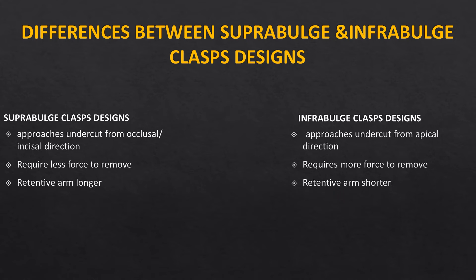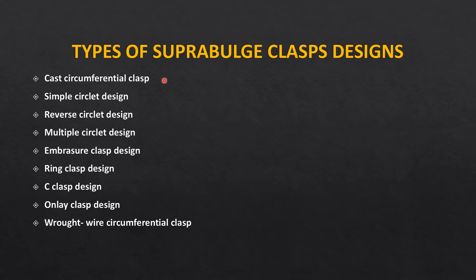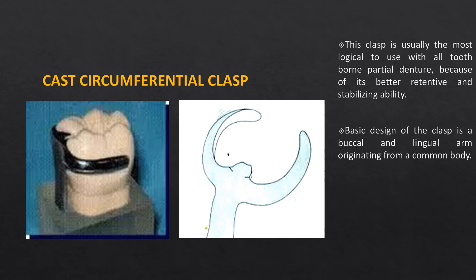There are many types of supra-bulge clasp designs given by various authors and available in textbooks such as Stewart's, McCracken's, and Textbook of Prosthodontics by Dr. Padmanabhan. The first and most simple is the C-clasp or cast circumferential clasp; then the reverse circumferential clasp; multiple circumferential clasp; embrasure clasp; ring clasp; onlay clasp; and a rod-wire circumferential or combination clasp. The simple cast circumferential clasp has a shoulder, body, rest, reciprocal arm, and retentive arm — the most basic clasp assembly used in most Class III and Class IV situations.